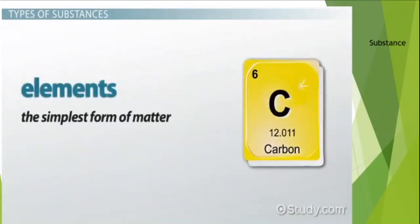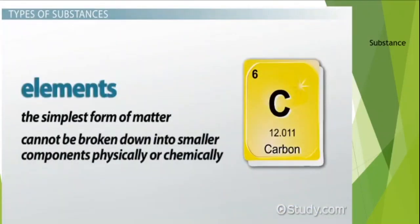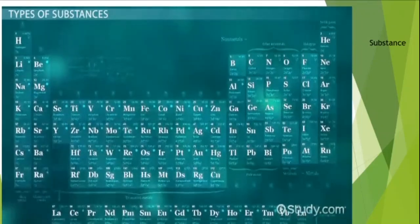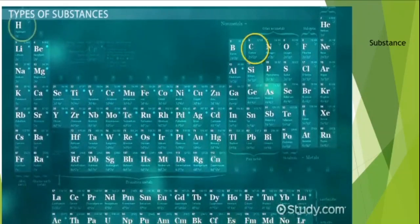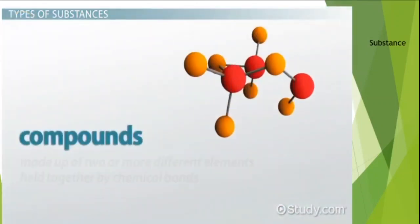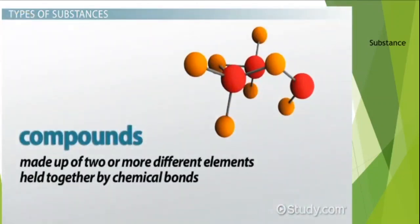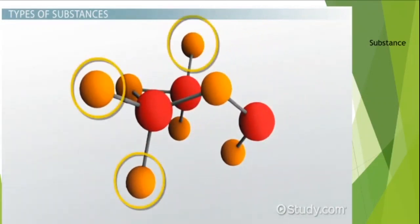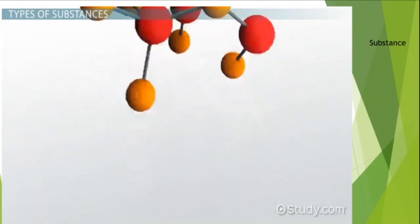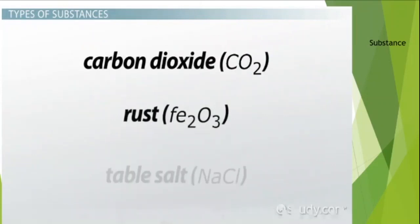Elements are the simplest form of matter and cannot be broken down into smaller components physically or chemically. All elements are listed on the periodic table and there are at least 118 known to man. Examples include carbon, hydrogen, oxygen, and sodium. Compounds, on the other hand, are made up of two or more different elements held together by chemical bonds. While compounds are also pure substances, they can be broken down into the elements that make them up. Examples of compounds include carbon dioxide, rust, and table salt.